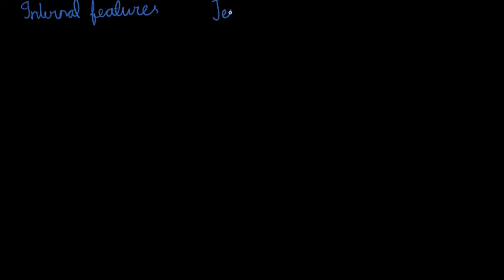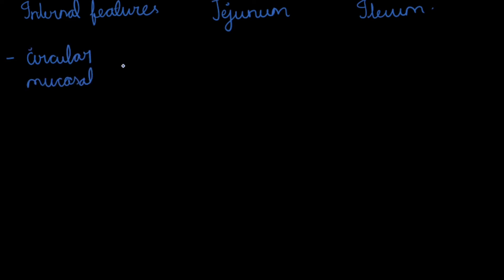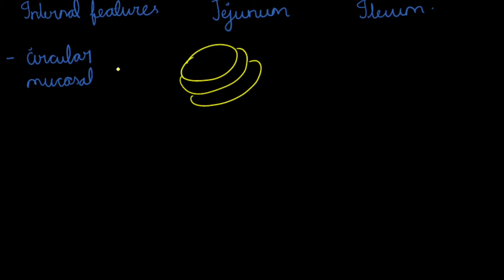Now regarding the internal features of the small intestine, we will discuss the mucosal folds. The circular mucosal folds mainly extend from the second part of the duodenum, become large toward the end of the jejunum, and then become sparse in the ileum. In the jejunum, the circular mucosal folds are very large and prominent, and they increase the surface area up to eight times.